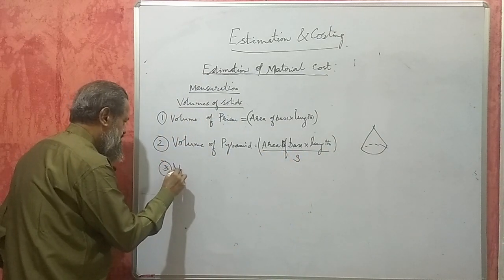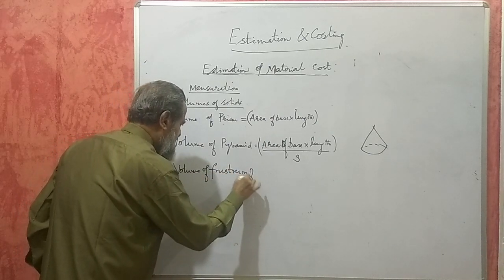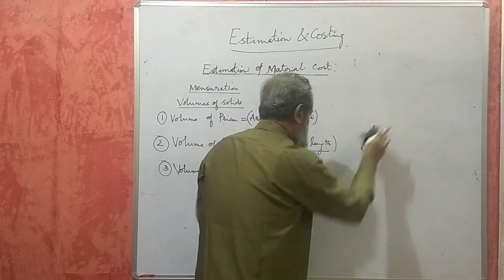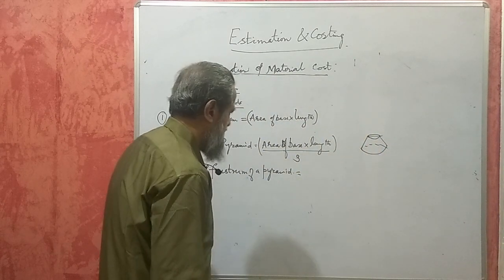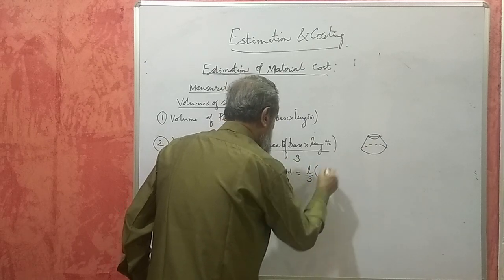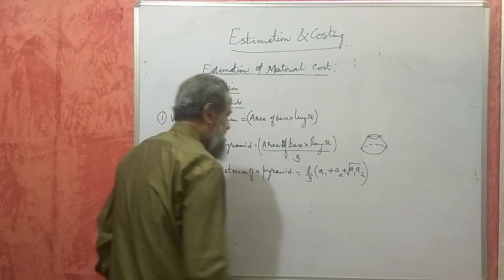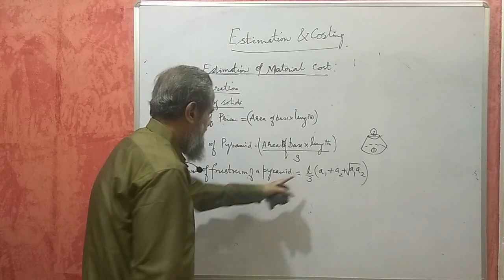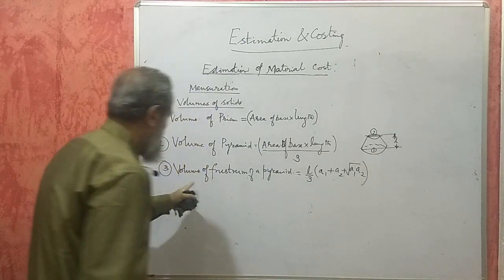Then, volume of the frustum of a pyramid — that is, if the pyramid is cut and the upper part is removed, it becomes a frustum. The formula is: (L/3) × (A1 + A2 + √(A1 × A2)), where A1 and A2 are the areas of the two parallel faces and L is the vertical distance between them.